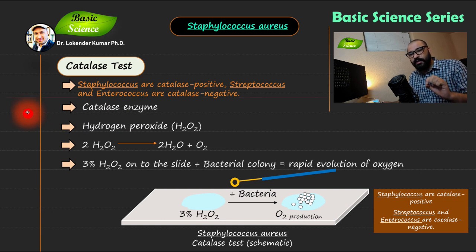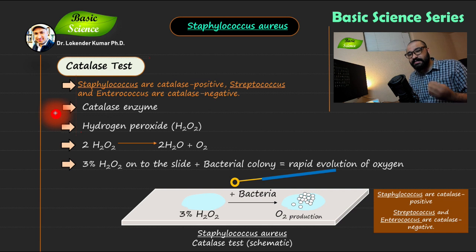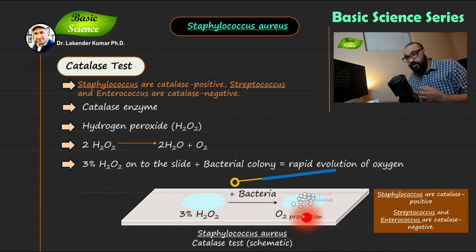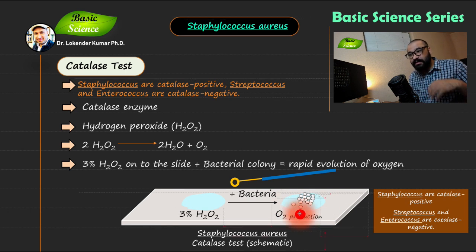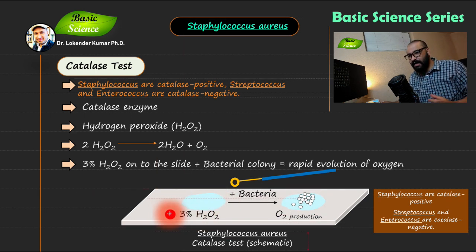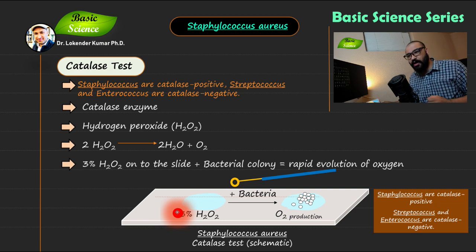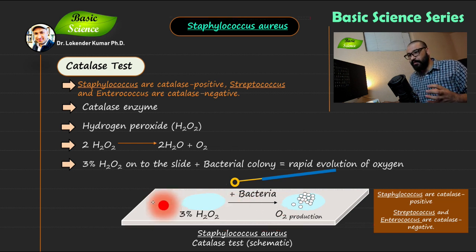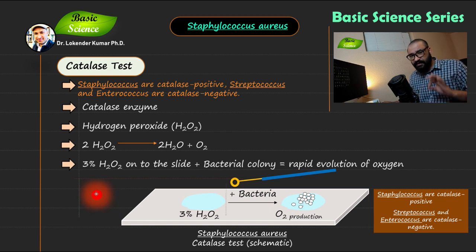The important point is that catalase positive organisms produce an enzyme known as catalase. What that catalase enzyme does is the degradation of hydrogen peroxide, which causes the release of oxygen. You can detect the presence of oxygen molecules in your reaction by seeing bubble formation. If you add a loopful of bacteria or a single bacterial colony to a few drops of H2O2 on a slide, you will see the production of oxygen in the form of bubbles.